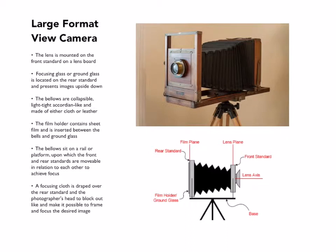All cameras since the first camera obscura-based cameras have been pretty much the same if you break them down to their most basic elements. The earliest cameras were very much like the view camera that you see on the right, which is essentially a board with a lens attached to it at the front and a ground glass where the film holders will be placed at the back, with bellows in between so that you have essentially a dark space between the lens and the film.